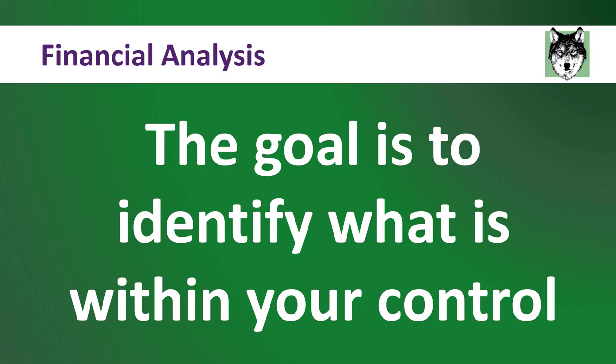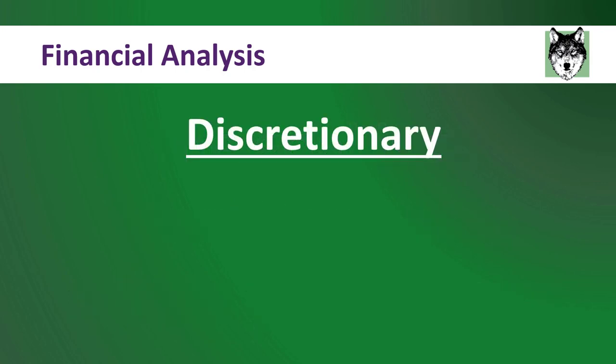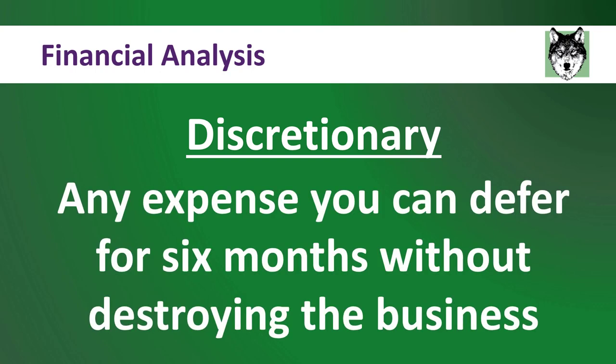The trick to doing this analysis successfully is to define the term discretionary. When you start going through this process, you're going to find it is actually very difficult to define discretionary. People will argue about where the line is — where an expense turns into a non-discretionary expense. I have a very simple rule: any expense you can defer for six months without destroying the business is discretionary. If you can put off an expense for six months, that means you have adequate control over managing that expense.